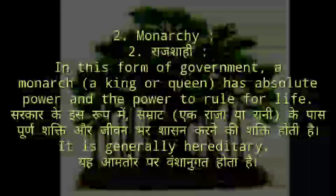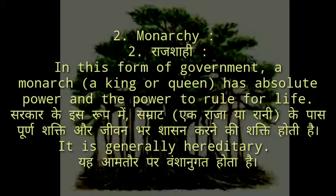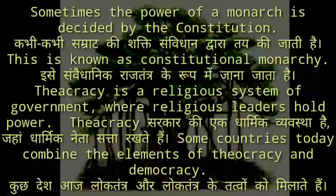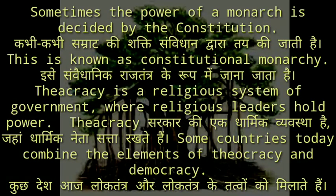2. Monarchy — in this form, a monarch, a king or queen, has absolute power and the power to rule for life. It is generally hereditary. Sometimes the power of a monarch is limited by the constitution — this is known as constitutional monarchy. Theocracy is a religious system of government where religious leaders hold power.